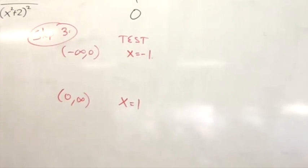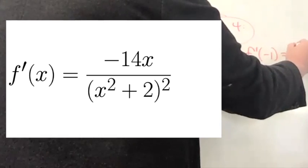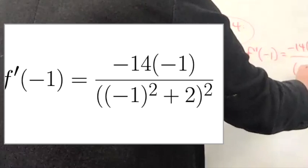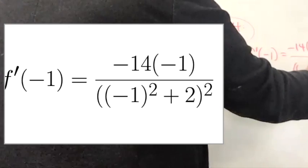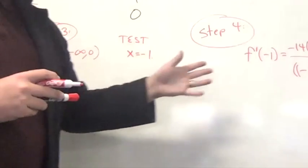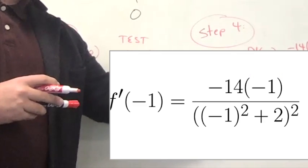So that's step three: we take our test points. Step four is we take our test points, we plug them into the derivative. f prime of negative one is negative 14 times negative one over negative one quantity squared plus two. I don't have to evaluate this, I just have to determine whether this is positive or negative.